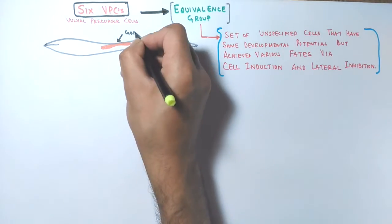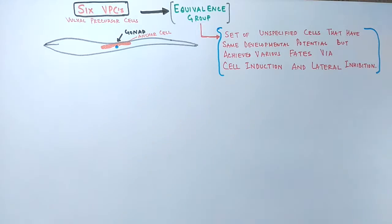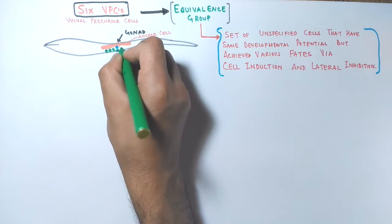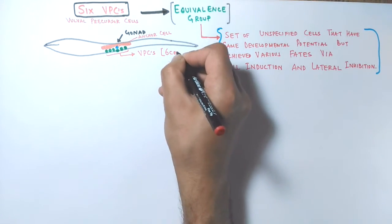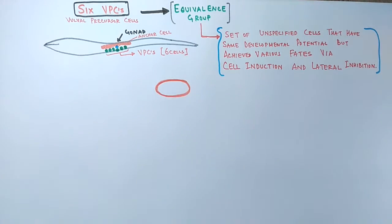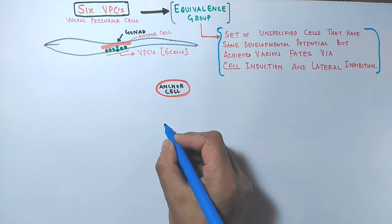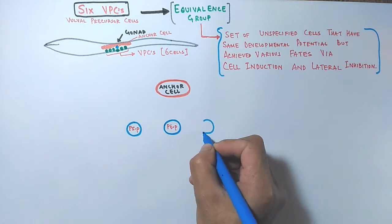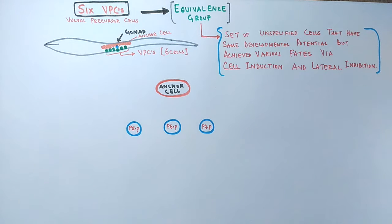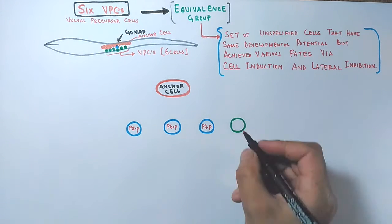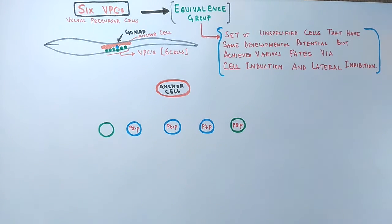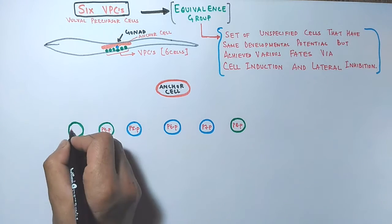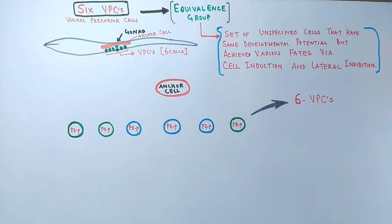Let's look at a diagram showing the structure of C. elegans. The gonad is shown in red. Beneath the gonad is the anchor cell shown in blue, and in close proximity to the anchor cell are the six vulva precursor cells shown in green. Zooming in, the closest VPC to the anchor cell is the P6.p cell. To its left is P5.p, to its right is P7.p, and further out are P8.p on the right and P4.p and P3.p on the left. These six cells form the equivalence group.